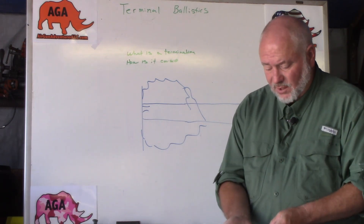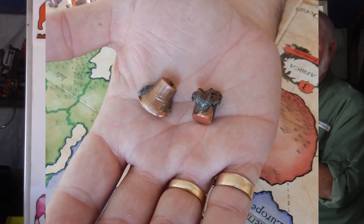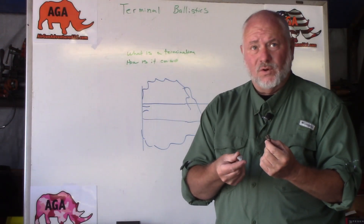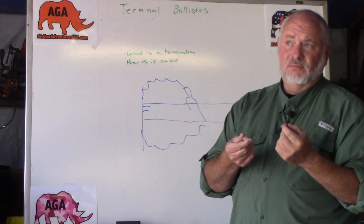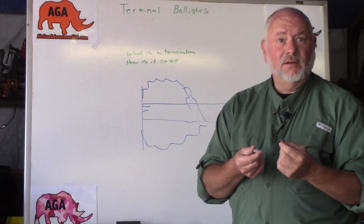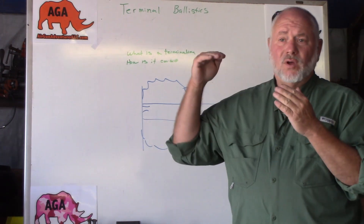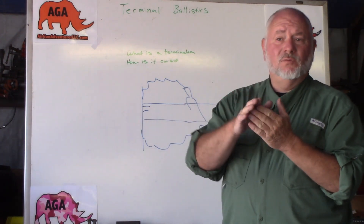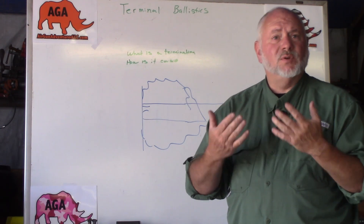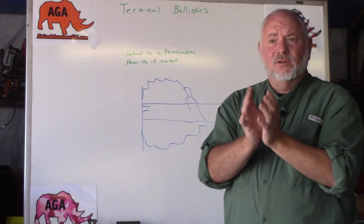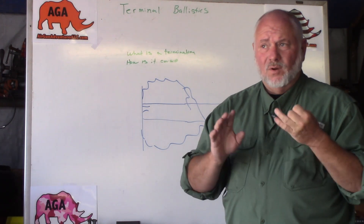We want our projectiles — these are actually projectiles recovered from animals — to have expanded. Both of these have expanded. These are copper with lead cores. This is important: we've spent hundreds of years trying to improve beyond lead. With copper, we can control how much the bullet expands and where it expands. We can control how far the bullet will go into the target medium before it yaws or upsets, creating additional damage inside. If you hit bones, you can end up with secondary missiles that cause additional damage.